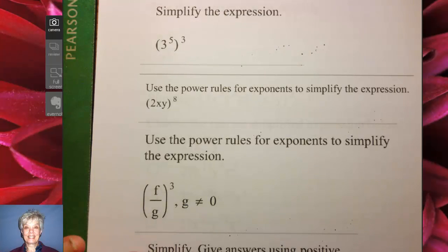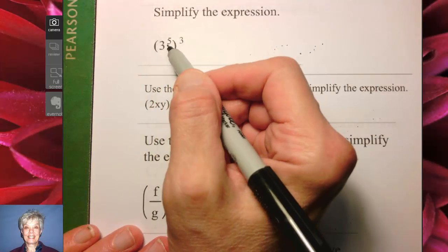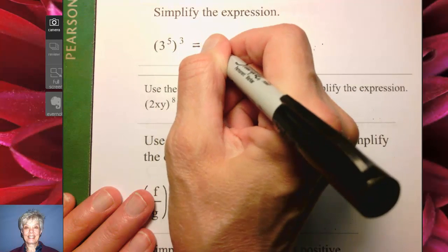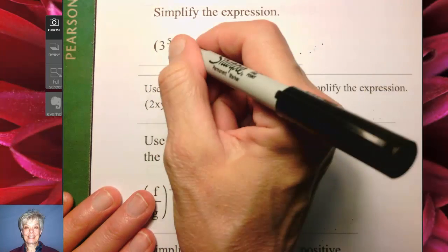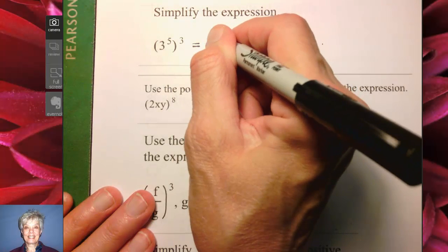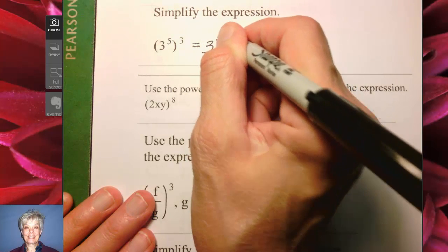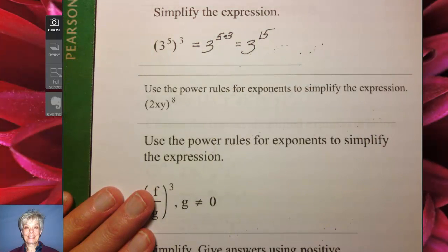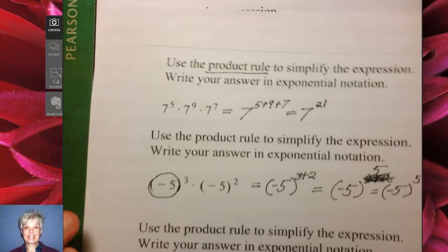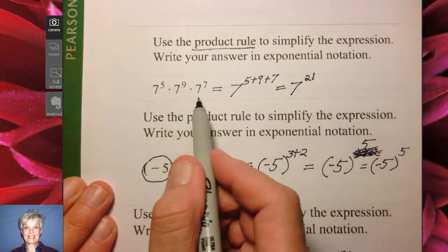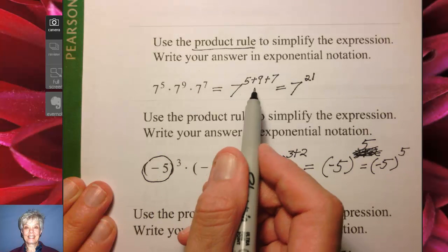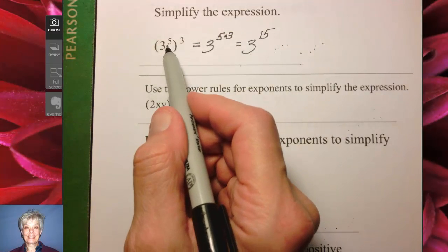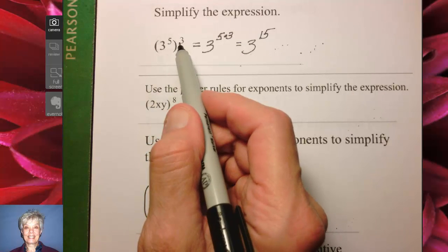We're using a slightly different rule here. Notice that we have a base raised to a power and then it's raised to a power again. When you have this kind of situation, you write the base and you multiply the exponents. 5 times 3 is 15, so 3 to the 15th power will be our answer. When you're multiplying like bases — like with the sevens — you write the base once and you add the exponents. But if you have a base raised to a power and you raise the whole thing to a power, you multiply the exponents.